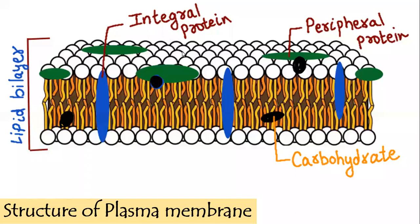When we talk about the structure of plasma membrane, you can see that the plasma membrane comprises a lipid bilayer. Lipid bilayer means that there are two layers of lipid. The head and the tail of the lipid are visible here. Two layers of lipids are present, and proteins are also present — some attached to the head part, and some embedded in between the lipid bilayer.